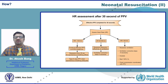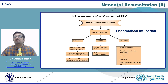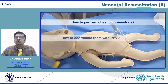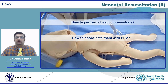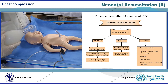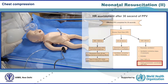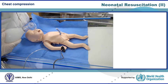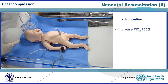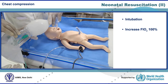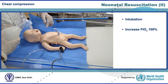Coming back to our neonatal resuscitation algorithm: when the heart rate is below 60 even after 30 seconds of effective PPV, we perform endotracheal intubation, increase the oxygen to 100%, and start high-quality chest compressions coordinated with effective positive pressure ventilation. In the video demonstration, this baby is already intubated. The FiO2 is increased to 100% — you can see the oxygen and reservoir attached to the bag so that FiO2 reaches 90 to 100%.